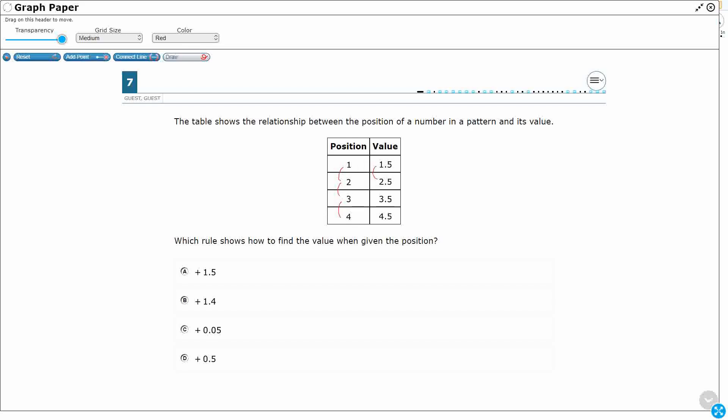Okay, so what we're not going to do is we are not going to look at just from one to the other. We're not going to say, oh, 1.5 plus 2.5, that's a plus one, because what we do is we have to look across the columns. So from position to value.